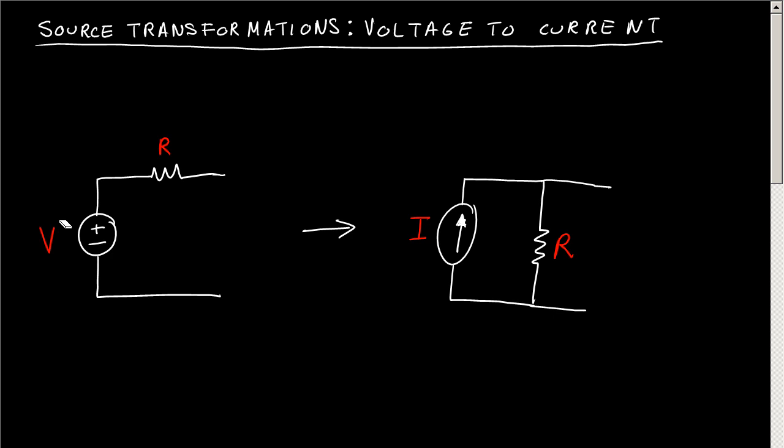The arrow of the current source points in the direction of the positive sign of the voltage. The rule also says that your current equals your voltage over your resistance.